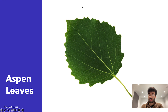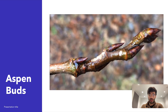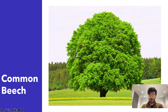Moving on to the aspen tree. It has quite a generic-looking leaf — a more circular leaf with some serration, but it's not very sharp serration. They do have flowers that have a drooping look, and the buds are alternating. That covers the aspen tree.